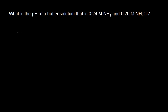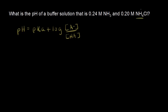In the last video, I showed you how to derive the Henderson-Hasselbalch equation: pH equals the pKa plus the log of the concentration of A minus over the concentration of HA. We're talking about a conjugate acid-base pair here — HA and A minus. For our problem, HA, the acid, would be NH4+, and the base, A minus, would be NH3, or ammonia. So the first thing we need to do, if we're going to calculate the pH of our buffer solution, is to find the pKa, and our acid is NH4+.